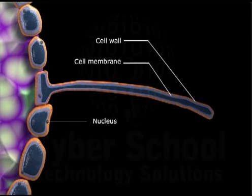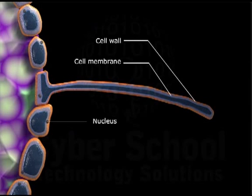The root tip has minute root hairs. Each root hair is made up of a root hair cell. It has a thin cell wall. The cell membrane envelops the protoplasm inside. The root hair cell allows water and mineral salts to enter the cell through the cell membrane.